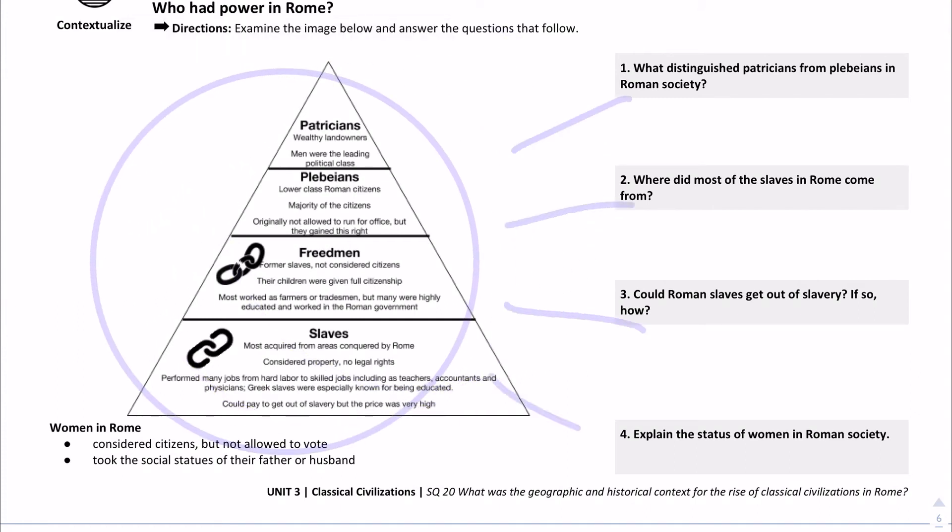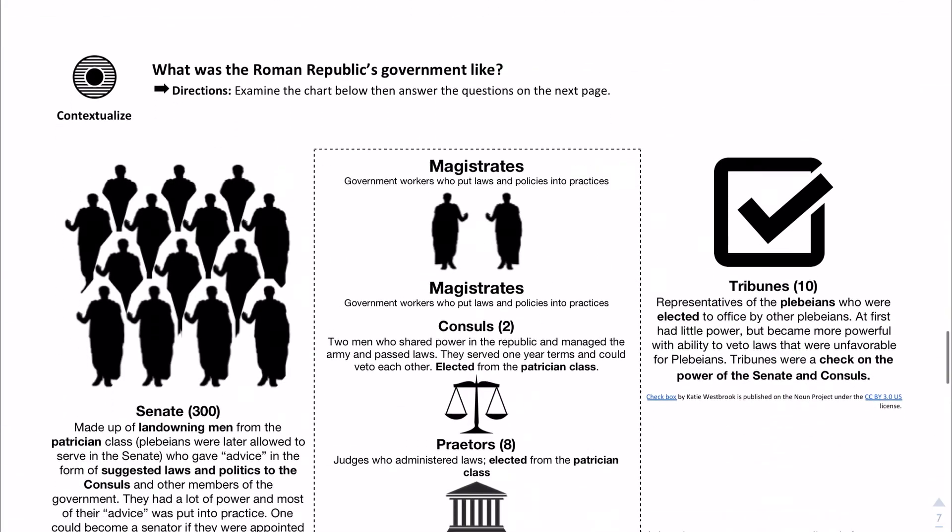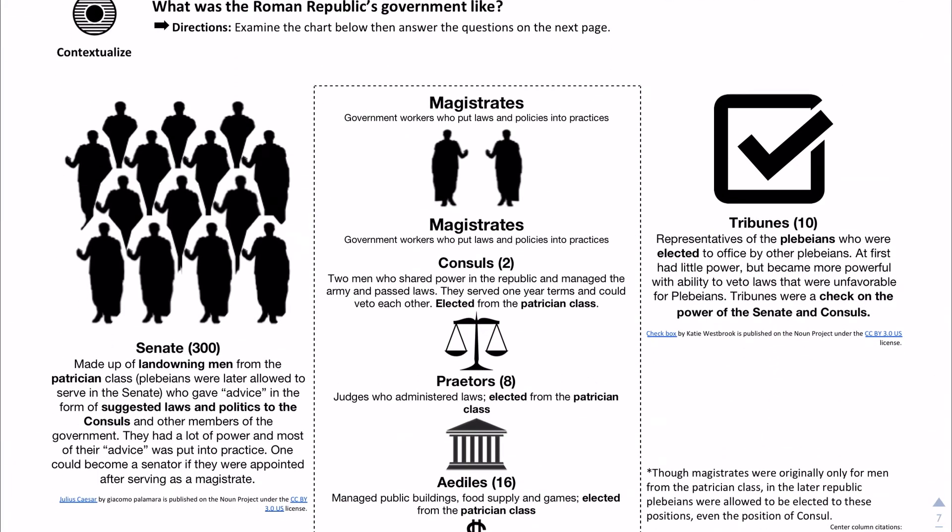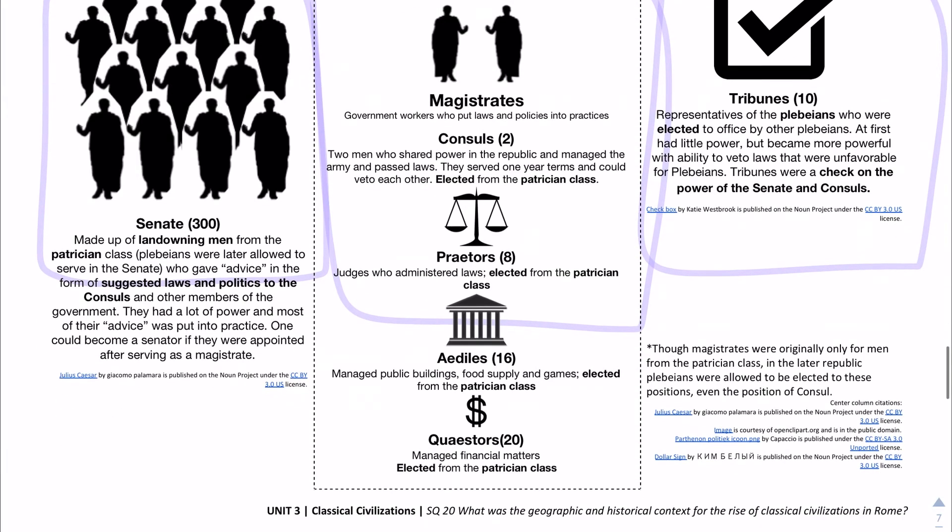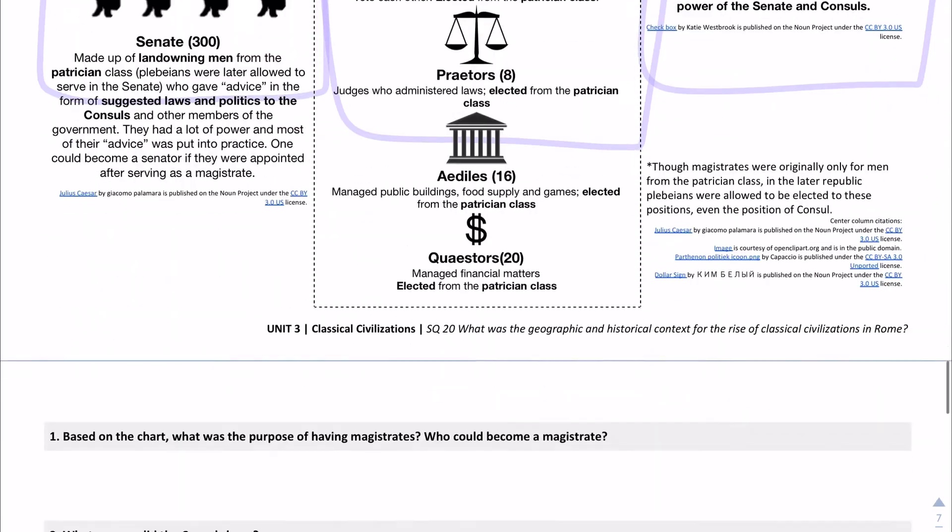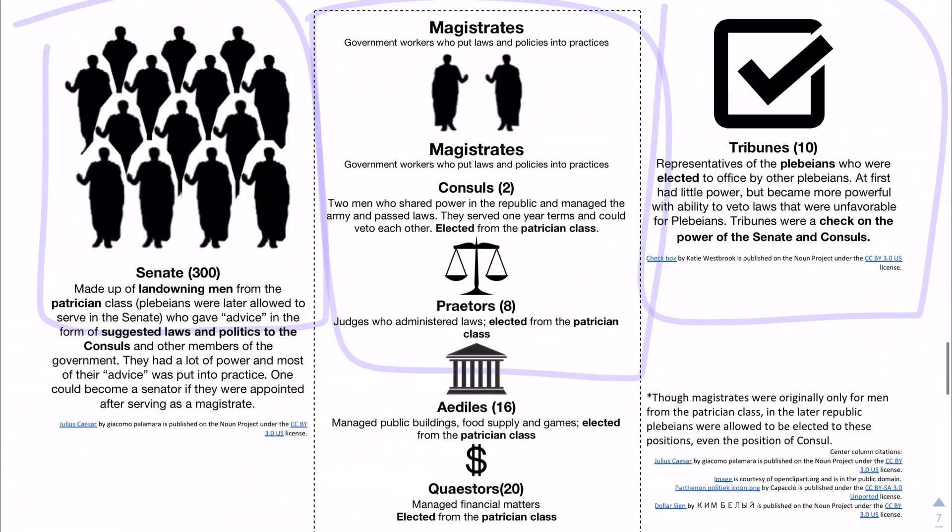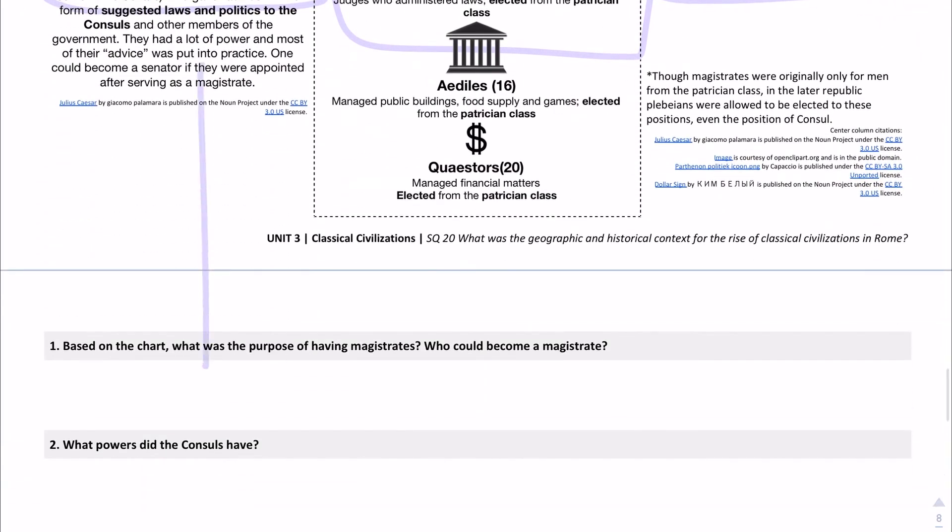Next, this is the Roman Republic's government setup. On the left hand side we have the Senate 300, we have magistrates in the center, and then last we have tribunes on the right hand side here. If you just look through the document right there, you'll easily be able to answer the questions right below. They directly answer these questions right below for us.